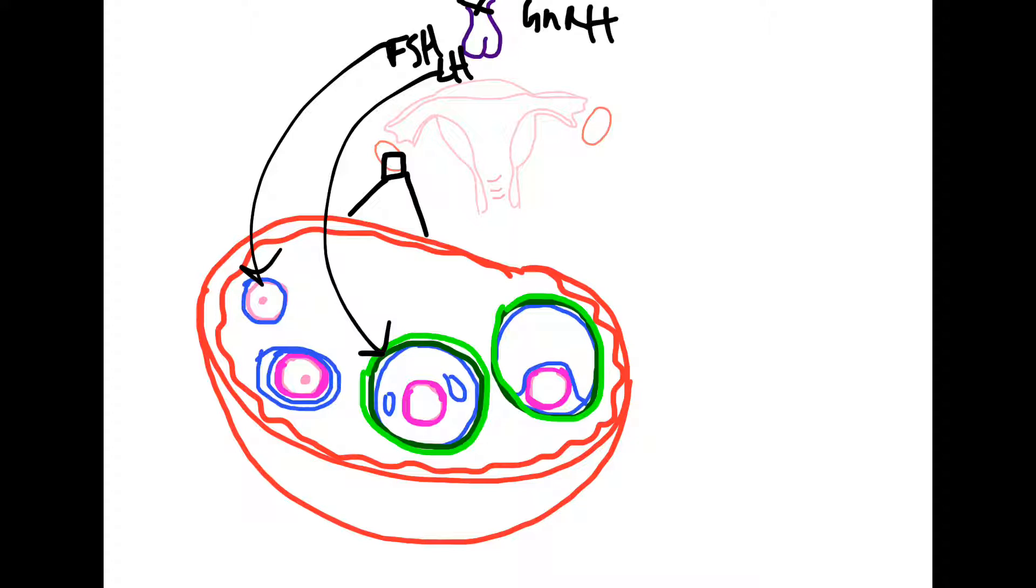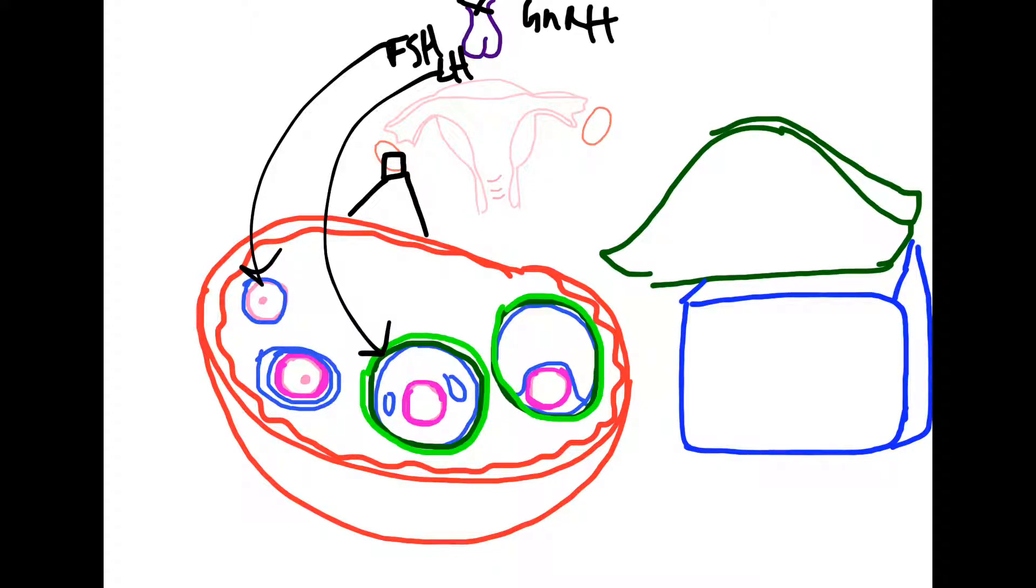So if we were to draw this out, this is what it will look like. We have the granulosa cell and then we have the theca interna cell. What happens is that the FSH receptor and LH receptor, which are all Gs coupled receptors, so we have our LH receptor and our FSH receptor.